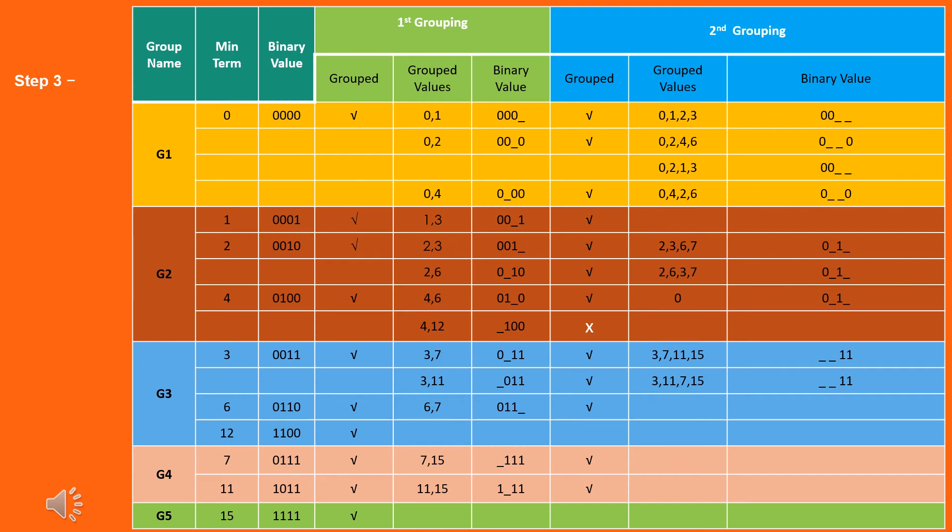Step three. Repeat step two with newly formed terms till we get all prime implicants. Note: If an element is not able to be grouped, instead of tick mark, use a cross mark.